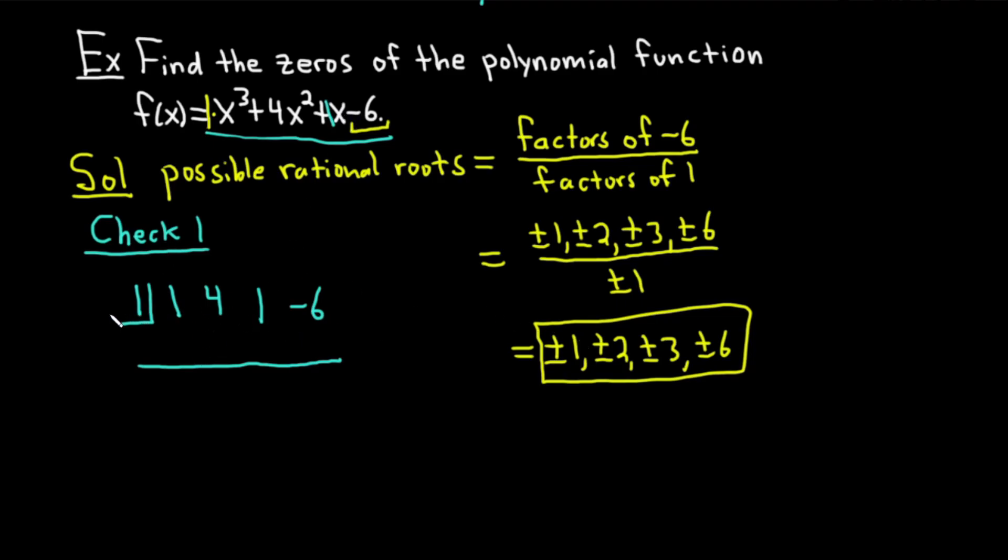So again, we're going to check 1. So you write down your 1, and then you write down your coefficients: 1, 4, 1, -6. You take that first number and you just bring it down. So 1. Then you start the process. 1 times 1 is 1. 4 plus 1 is 5. 5 times 1 is 5. 1 plus 5 is 6. 6 times 1 is 6. Oh, this is so good. -6 plus 6 is 0. This is super good because whenever you get 0, that means that this number, in our case 1, is a root. x = 1 is a root. So we have one of our answers.